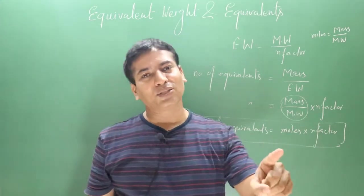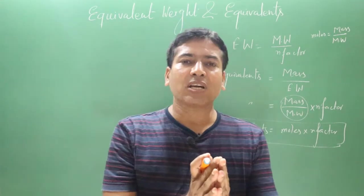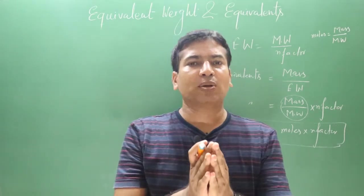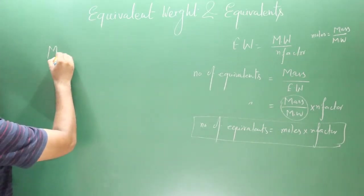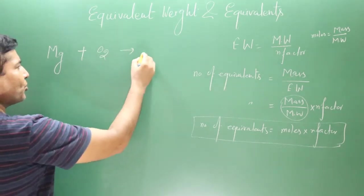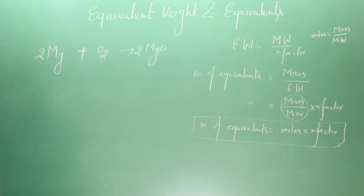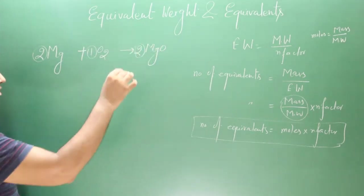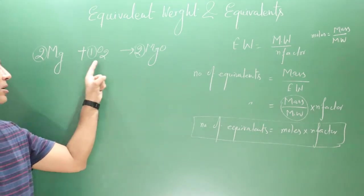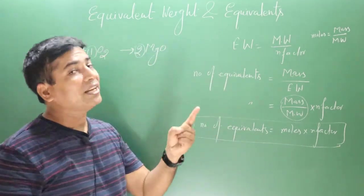In any chemical reaction, if we multiply the moles of individual substances by their respective n-factor values, we can calculate the equivalents of each substance. Let me take one chemical reaction — magnesium reacting with oxygen gas to produce magnesium oxide. In this balanced equation, two moles of Mg react with one mole of O₂ to produce two moles of MgO.